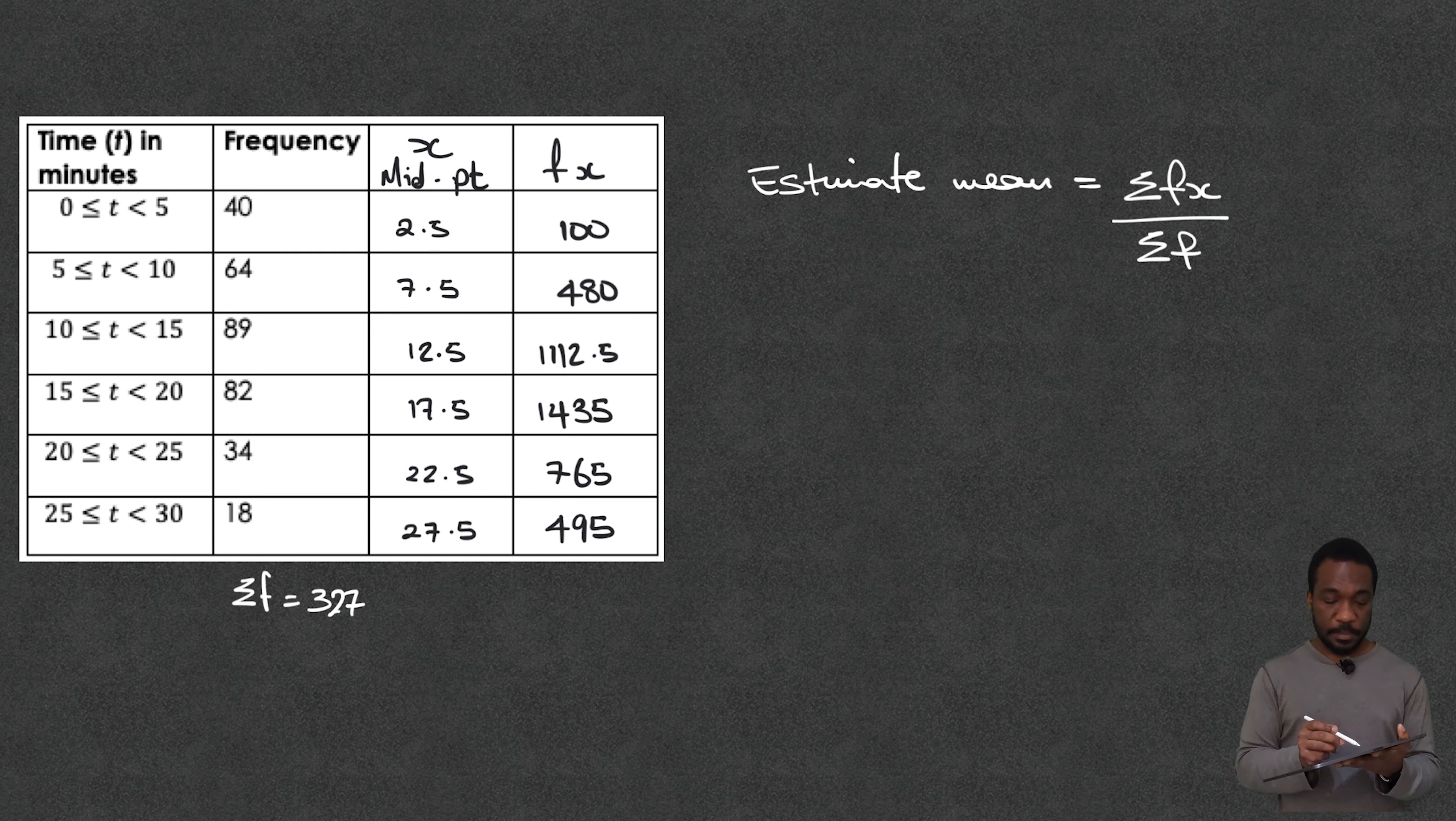So I've got all my numbers in here just by multiplying the frequency and the x it gives me these answers on the end here. So 89 times 12.5 gives me that 1112.5 and so on.